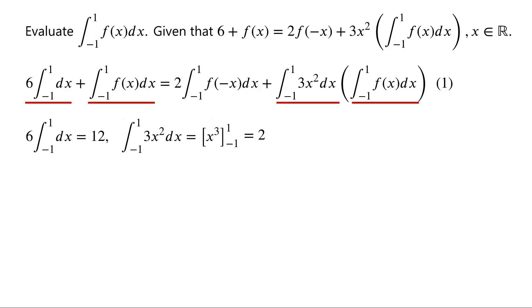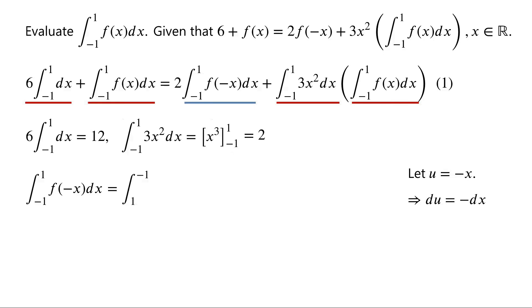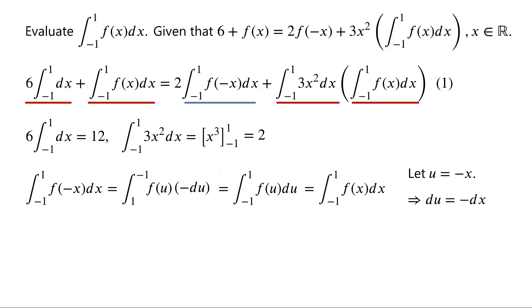The integral of f of x dx from negative 1 to 1 is what we want to evaluate. Next, we will evaluate the integral of f of negative x dx from negative 1 to 1. We let u equal negative x, then du equals negative dx. When x equals negative 1, u equals 1. When x equals 1, u equals negative 1. So f of negative x equals f of u, and dx equals negative du. The negative sign can be used to swap the bounds of the integral, giving us the integral of f of u du from negative 1 to 1, which is identical to the integral of f of x dx from negative 1 to 1.